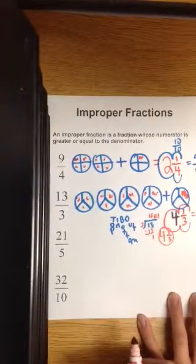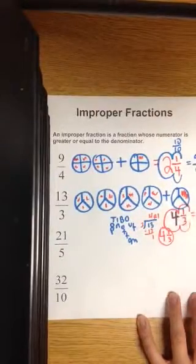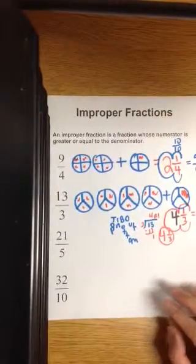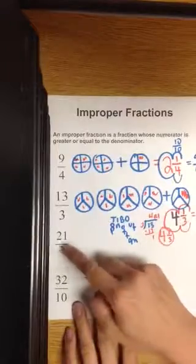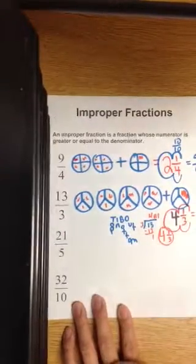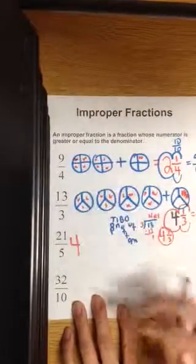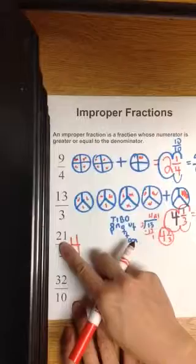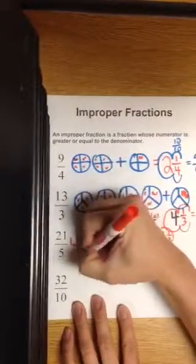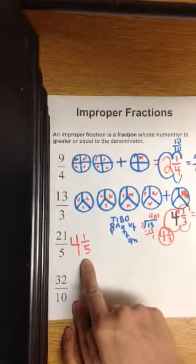But hopefully you can do this in your head. So how many thirds go into 13? Four times with one extra for one third. Let's try the next one in our head. How many fifths go into 21? How many fives go into 21? Five, 10, 15, 20. It goes in four times. That's 20 with how many left over? One left over. So four and one fifth. 21 fifth is the same as four one fifth.